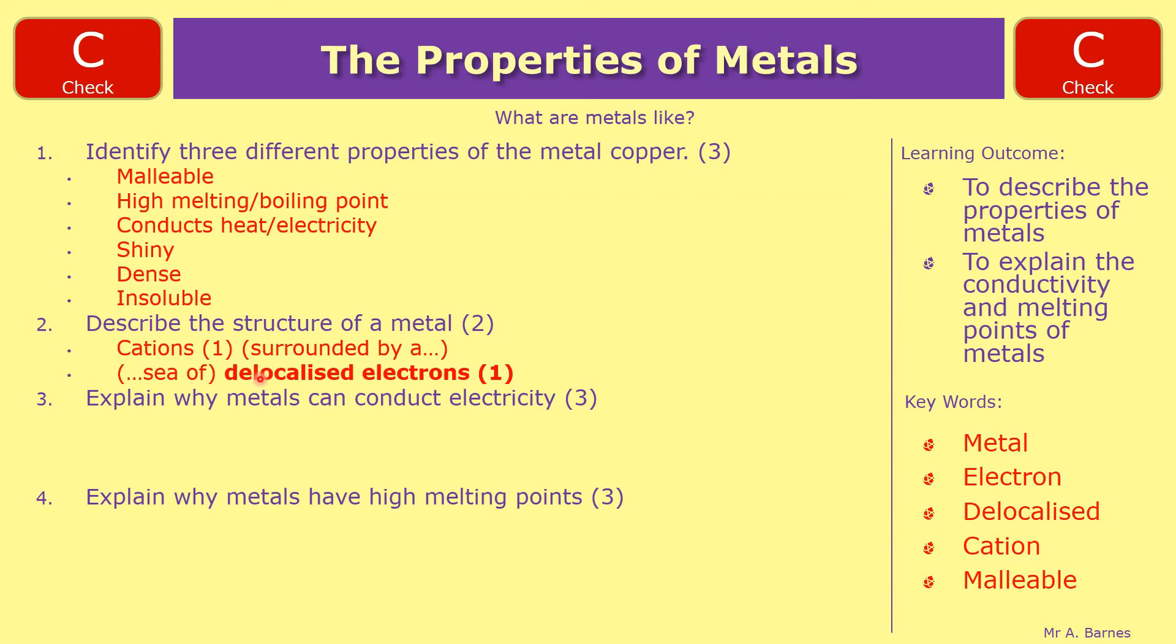Question three. Explain why metals can conduct electricity. So the first mark is saying you've got your delocalised electrons again. That's a key phrase to learn. They're free to move. For one mark. And they can carry a charge. For one mark.